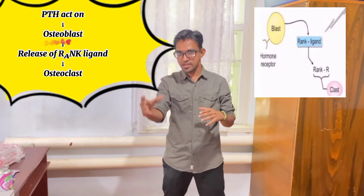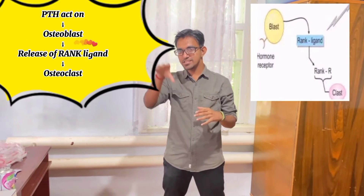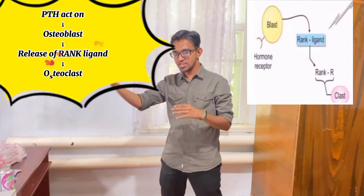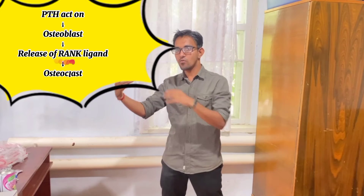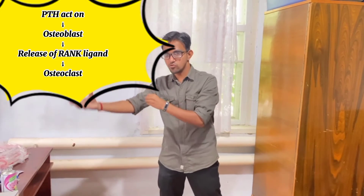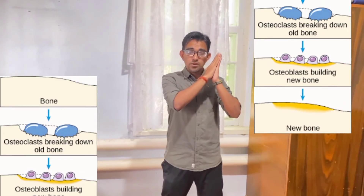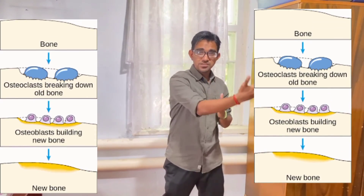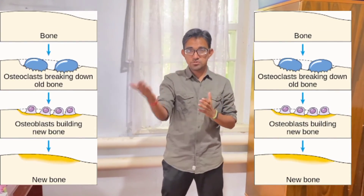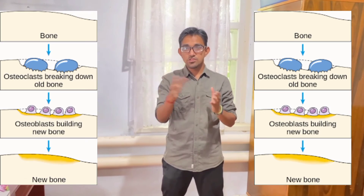And the RANK ligand was released. RANK ligand was bound to osteoclast, and there was bone resorption. So, bone formation and bone resorption together is called remodeling.